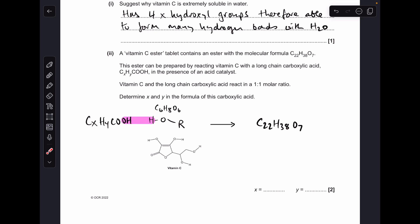It's been reacted via an esterification reaction with a carboxylic acid represented as CXHYCOOH. I've highlighted the atoms that will disappear to generate the ester, and there's the molecular formula for the ester. Starting with the carbons: the ester has 22 carbons, six came from the vitamin C, so there must be 16 coming from the carboxylic acid. There's one there, so X is going to be 15.